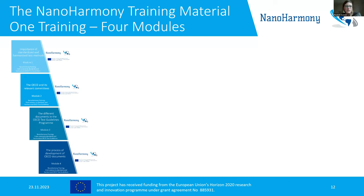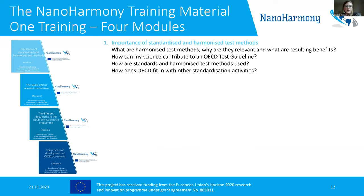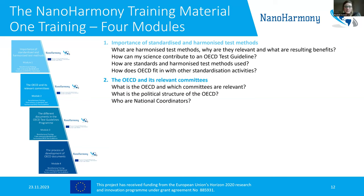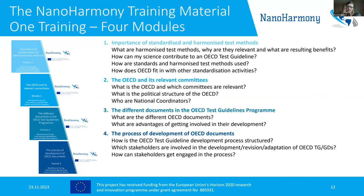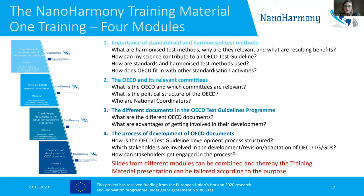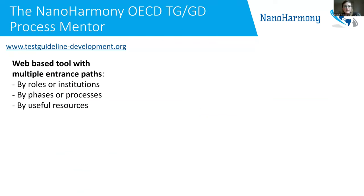Looking into the Nanoharmony training material, it is built up into four modules: the first on the importance of standardized and harmonized test methods; one on the OECD and its relevant committees; one on different documents in the OECD test guideline program; and one — the longest — on the process of development of OECD documents. The slides from those modules can be combined and used for training or for giving lectures at university.